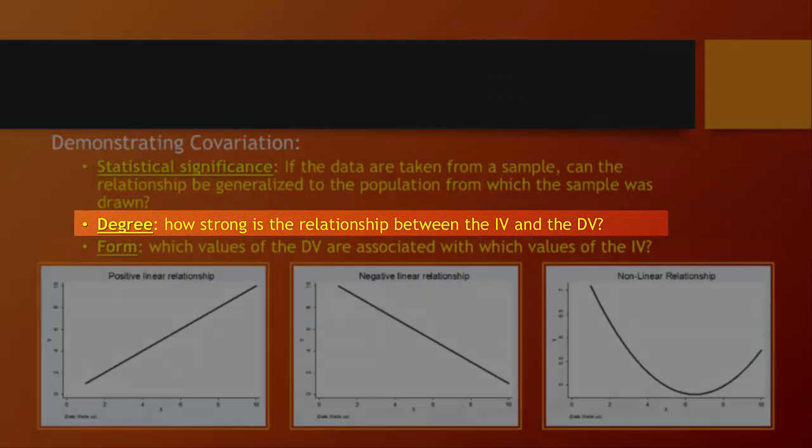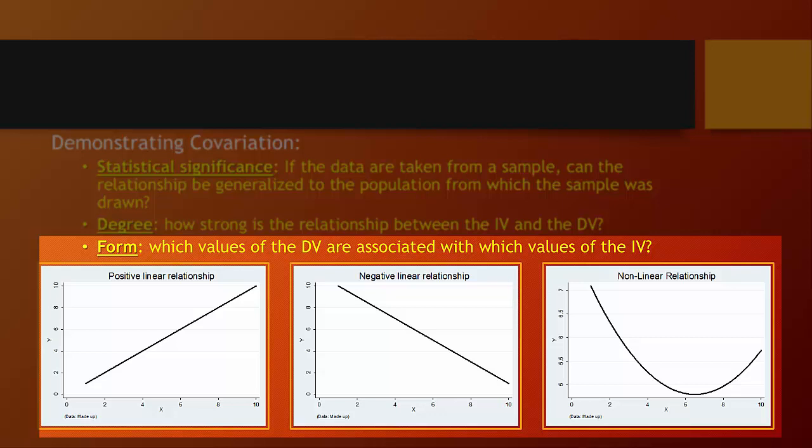Finally, we're going to look for form. So we're going to look for the directionality of the relationship, or which values of the dependent variable are associated with which values of the independent variable.